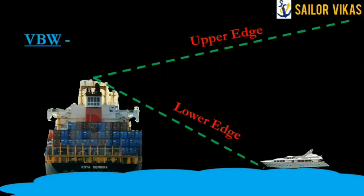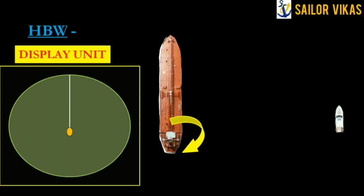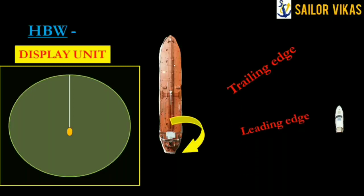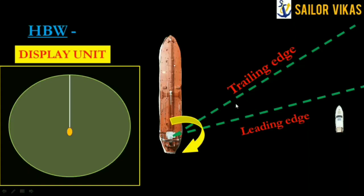Now let's understand horizontal beam width. For horizontal beam width, we view from a bird's eye perspective, where we can see a tanker and a small yacht on the radar screen. The scanner rotates clockwise, and the radar beam has two horizontal edges: a leading edge and a trailing edge — just as vertical beam width had upper and lower edges.